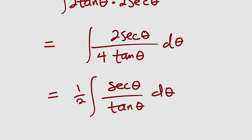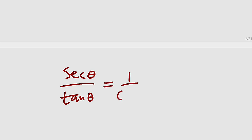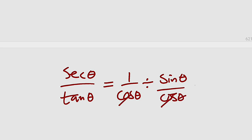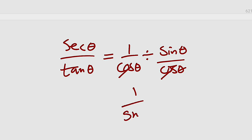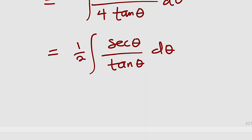This equals 1 divided by 2, multiplied by the integral of secant theta divided by tangent theta d theta. Now, secant theta divided by tan theta equals cosecant theta — here's why: secant theta is 1 over cos theta, and tan theta is sin theta over cos theta. Dividing gives 1 divided by sin theta, which is cosecant theta. Therefore, the whole function reduces to cosecant theta.